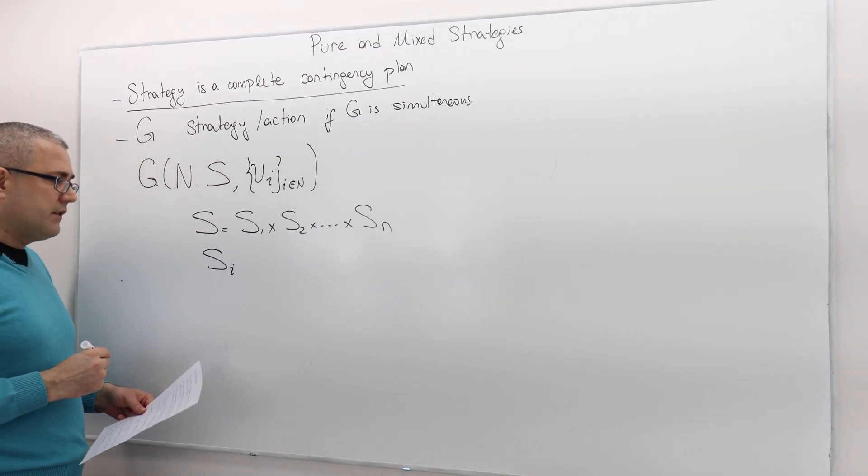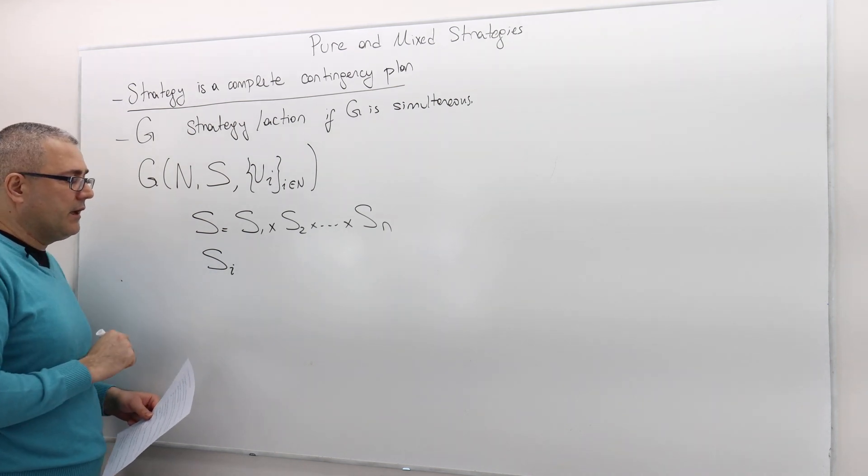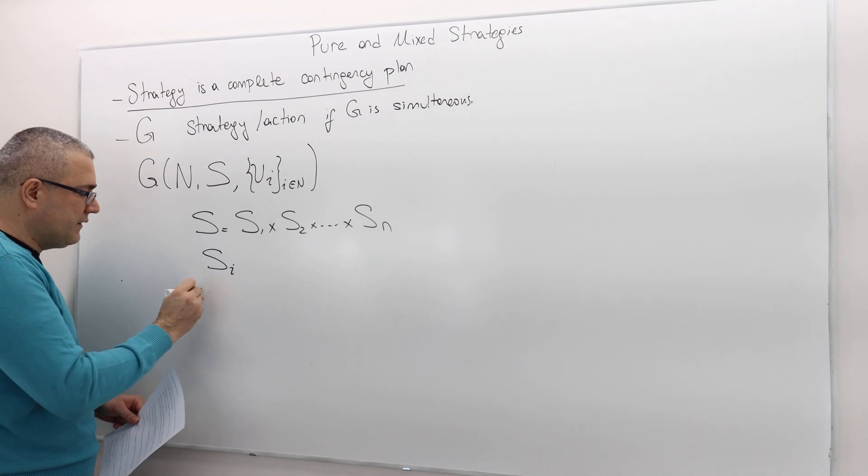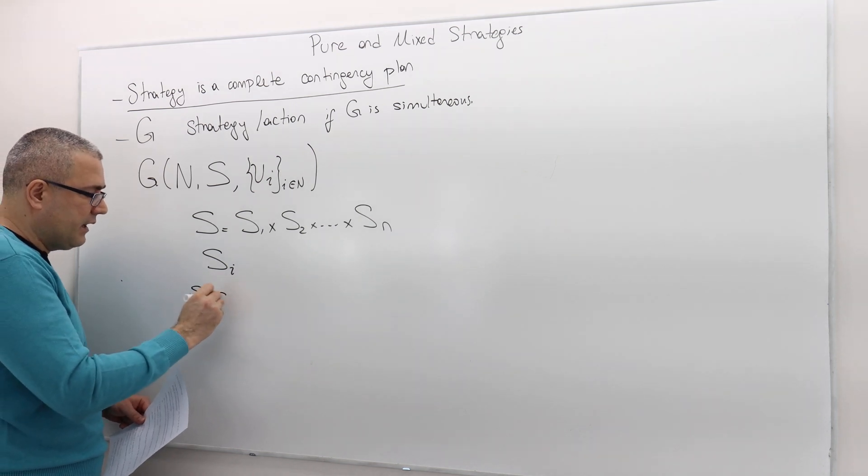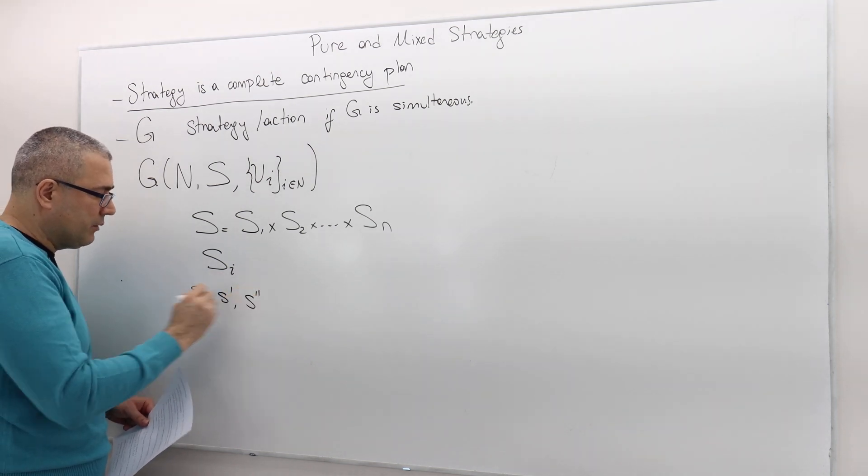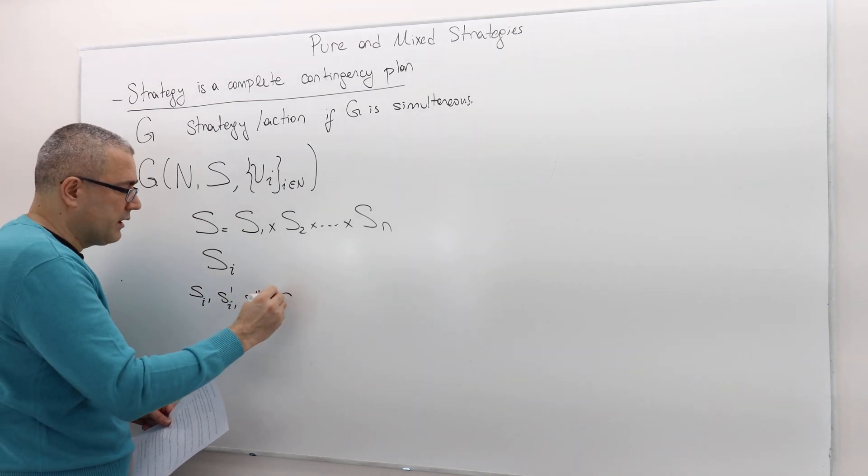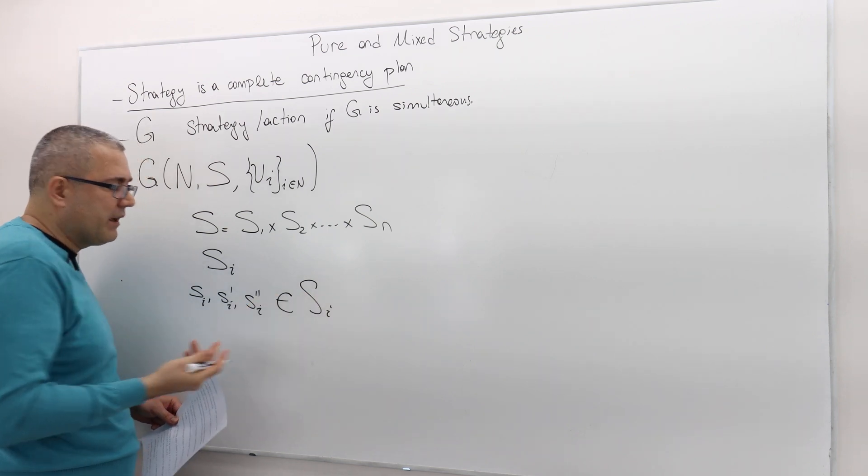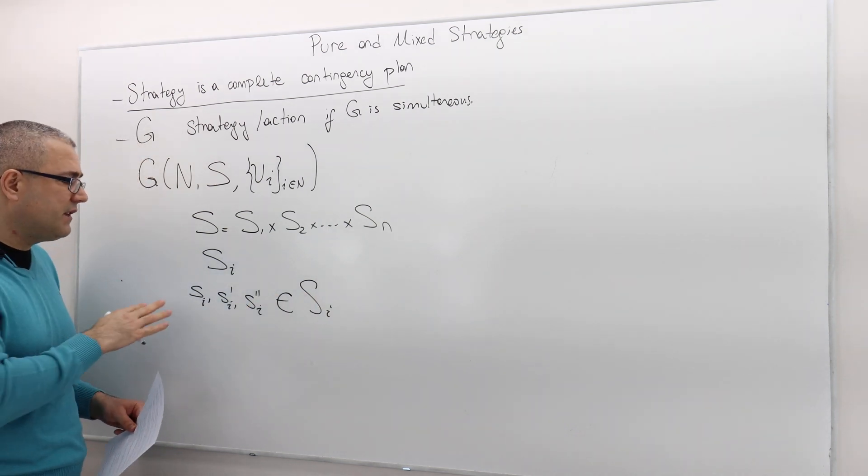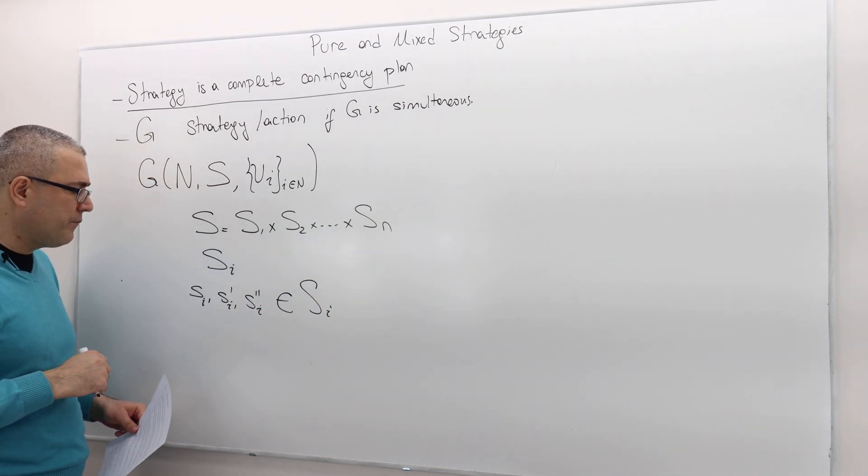A standard element in a set of strategies is denoted by S, S prime, S double prime I. Don't forget the I's because those are the strategies that belong to player I. These are typical strategies. This is the notation we use.